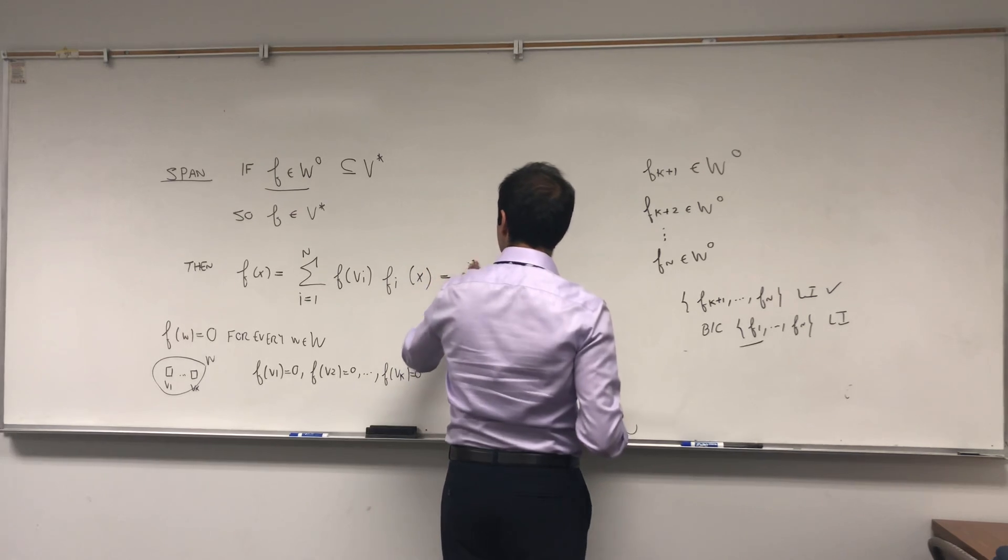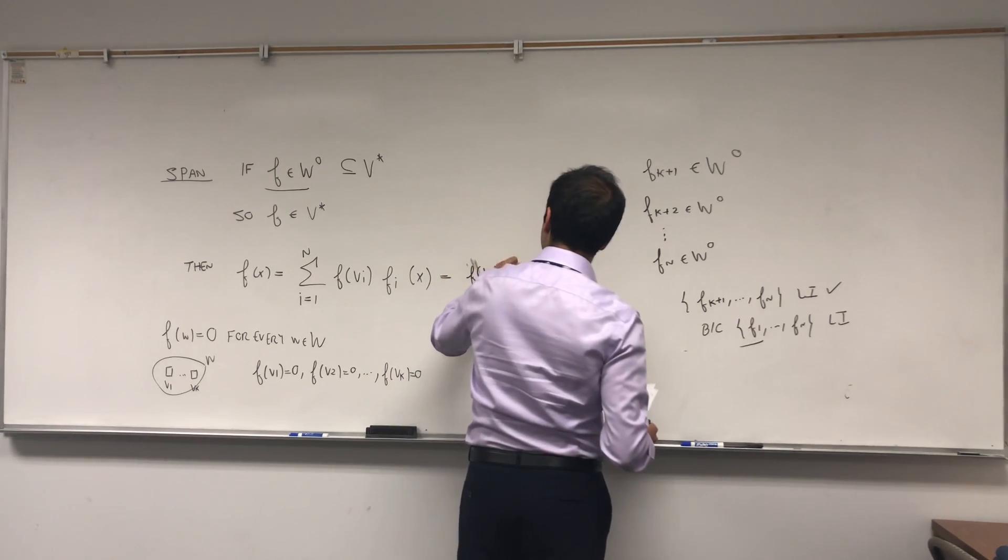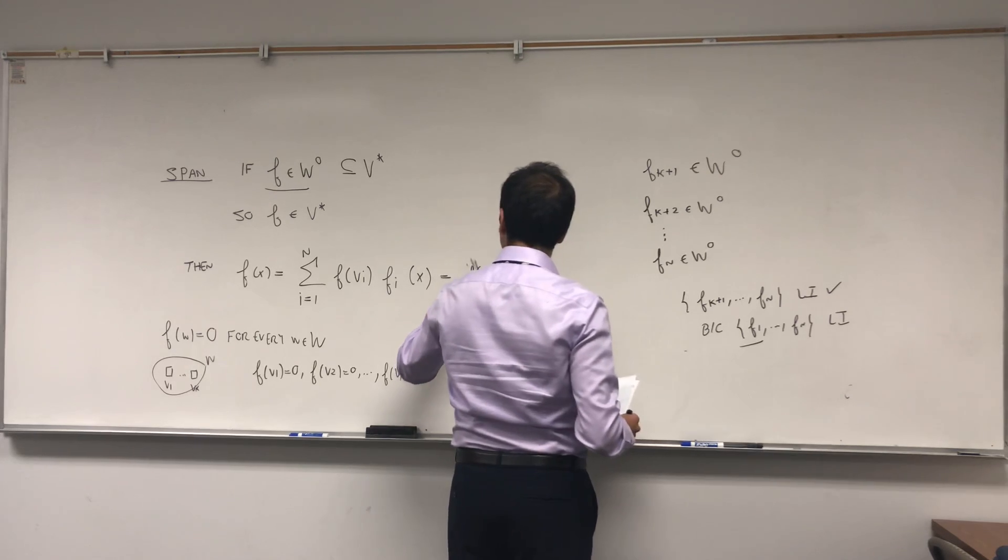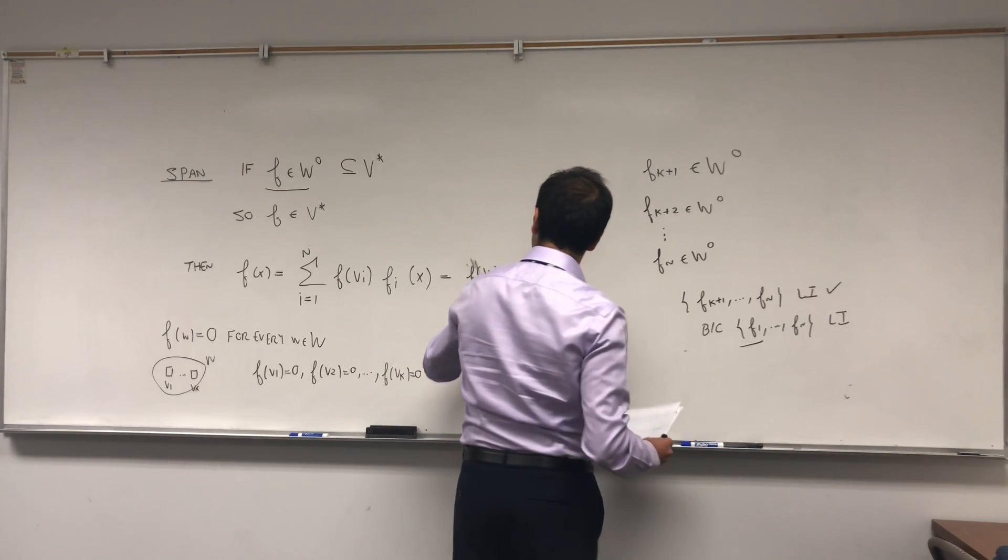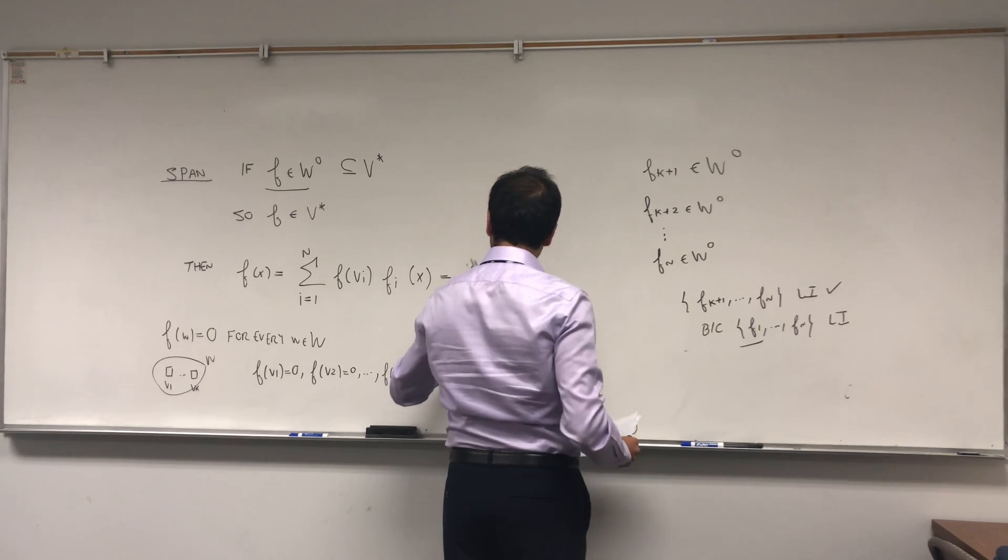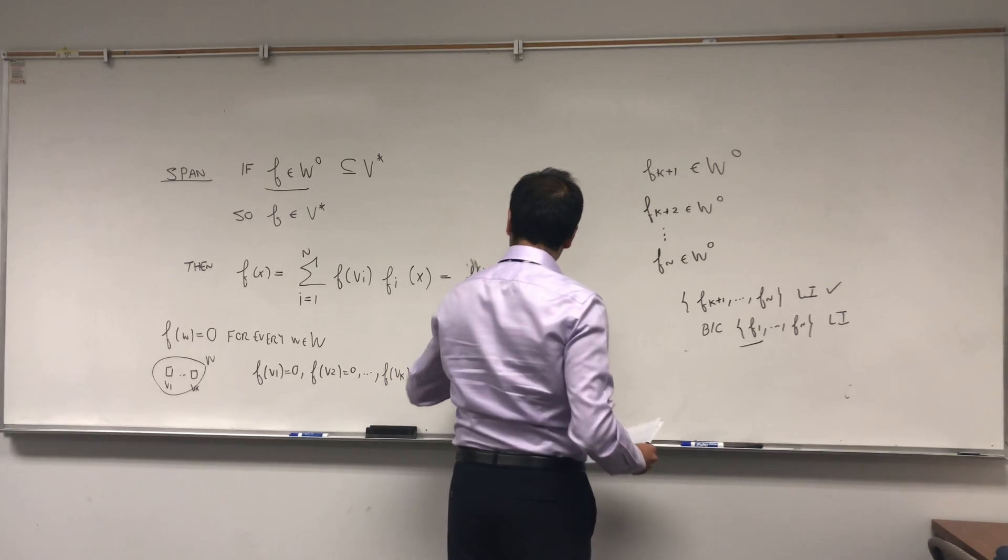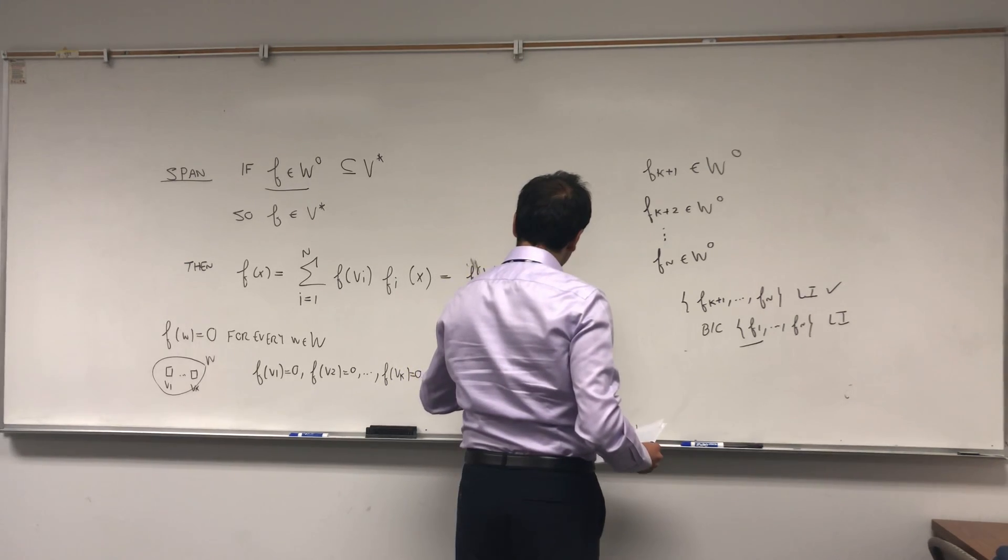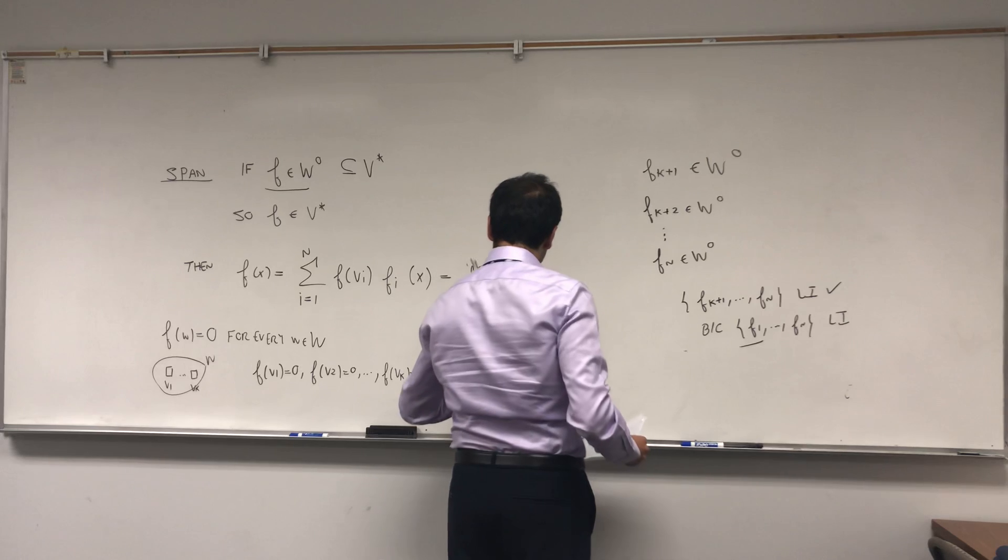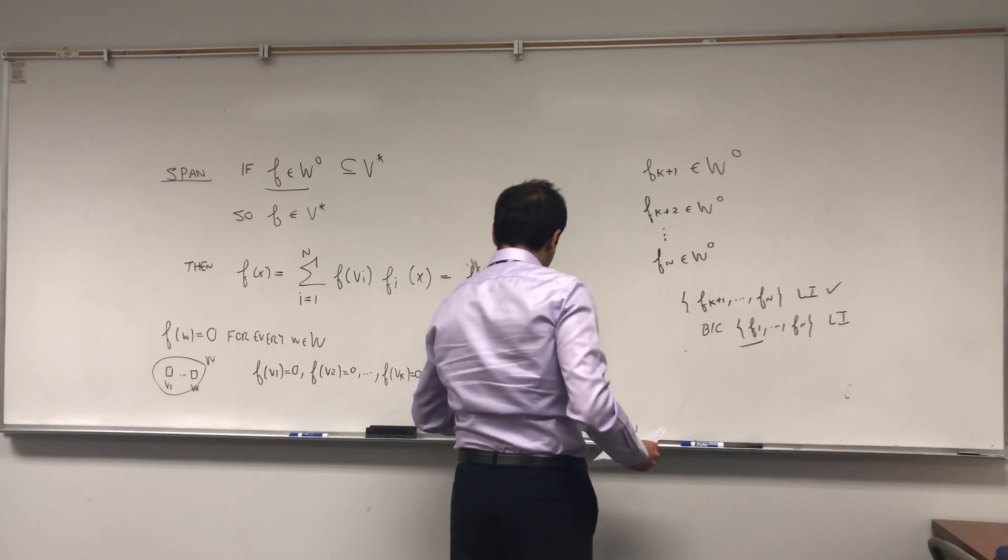f(v1) times f1(x) plus f(v2) times f2(x) plus dot dot dot plus f(vk) fk(x) plus other terms, f(vk plus one) fk plus one of x, dot dot dot plus f(vn) fn(x).